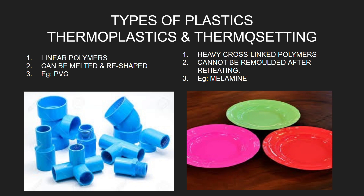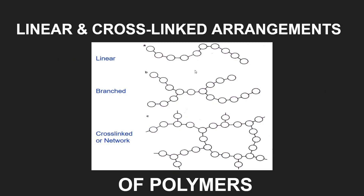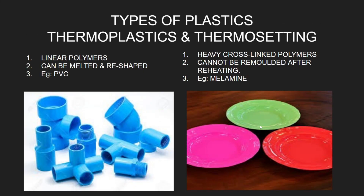Let's talk about thermosetting plastics now. These are heavily cross-linked polymers. Here we have seen the cross-linked network of polymers once again. These thermosetting plastics are heavily cross-linked polymers and the main thing is they cannot be melted or remolded once heated.